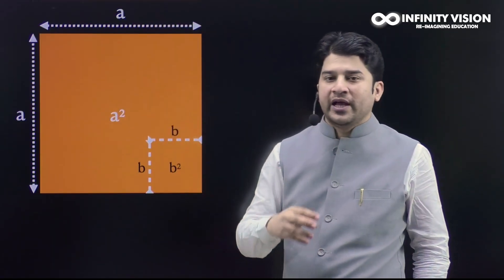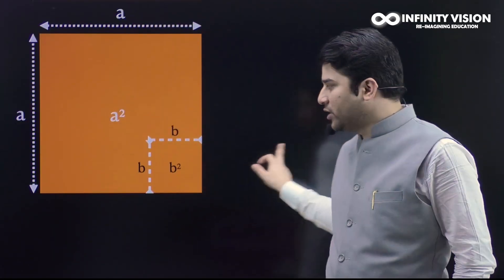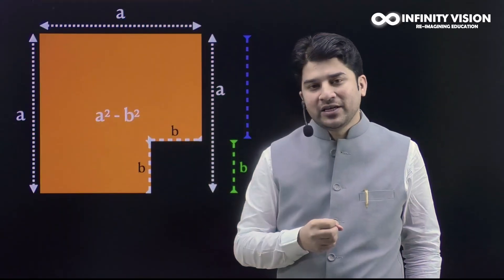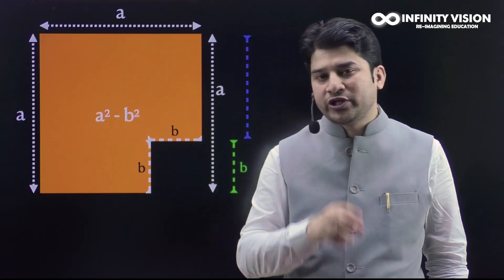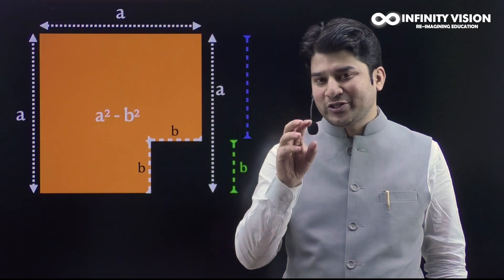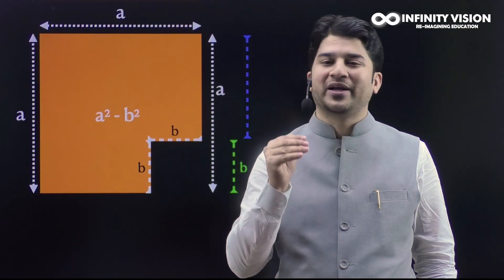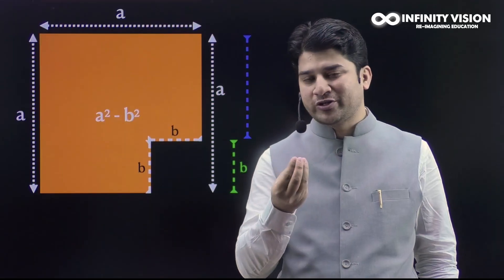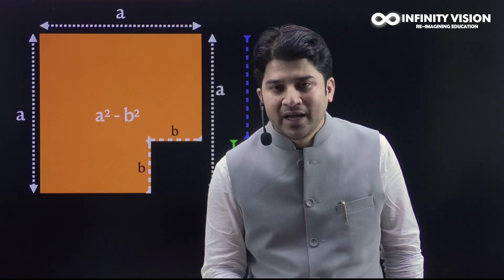Now I want you to cut this smaller square off from the bigger square and look at the remaining portion. It would look something like this. If I ask you what is the area of this new shape, you are going to call it a² - b² — that is, area of the big square minus the area of the smaller square, because the smaller square has been taken away.